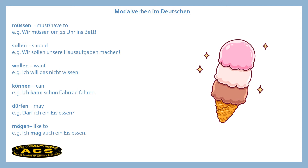Generally we have six modal verbs in the German language, even though some people also count the verb Möchten as a modal verb. Möchten means 'would like to.' But let's look at the ones that everyone agrees on. The first one is Müssen. Müssen can be translated as 'must' or 'have to' — so it expresses an obligation.